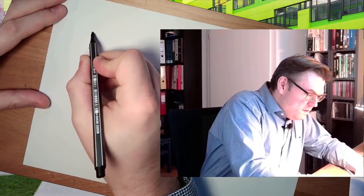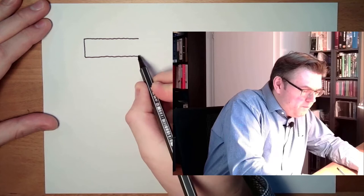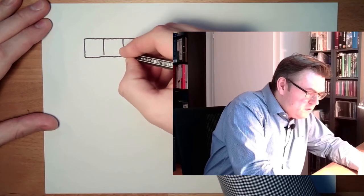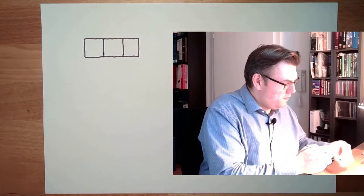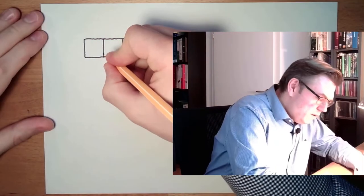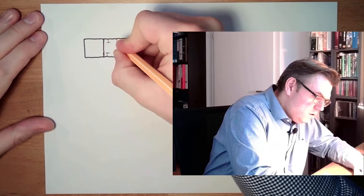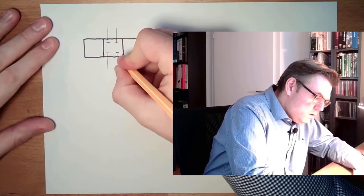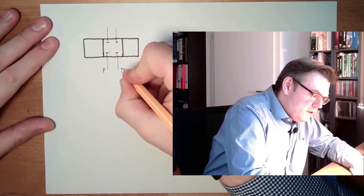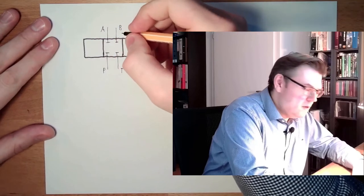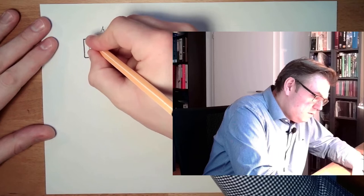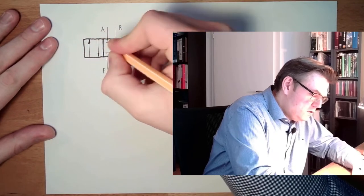Today we are going to talk about proportional way valves. Let's briefly talk about what a way valve was. So there was this symbol. I am drawing now a four-three way valve. So there are four connections and three switching positions. The middle position is blocked. One was the pressure, one was the tank, and two working lines A and B. And then there was the straight position and the cross position.